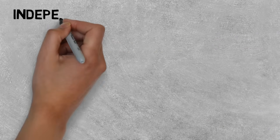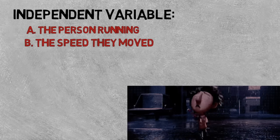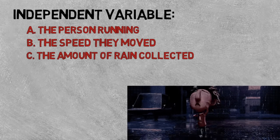So can you identify the independent variable? Was it the person running through the rain, the speed of movement through the rain, or the amount of rain collected on their clothing?